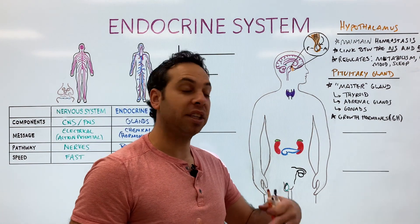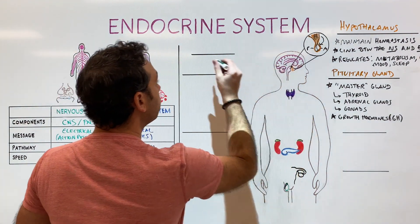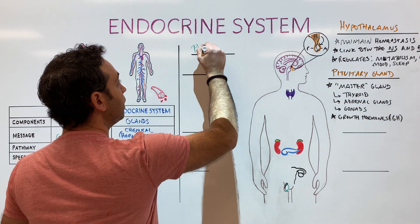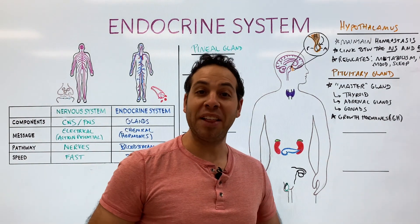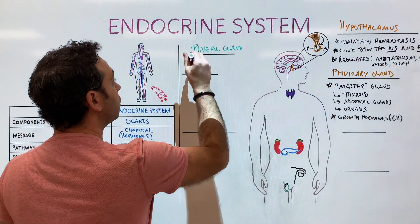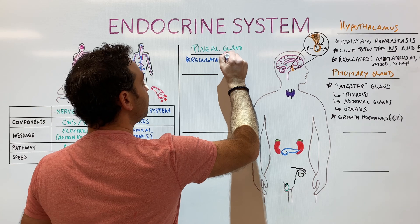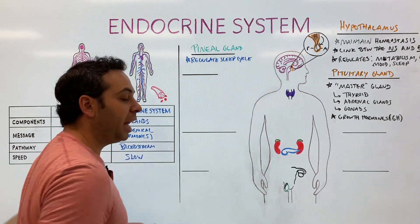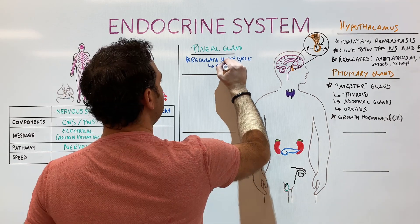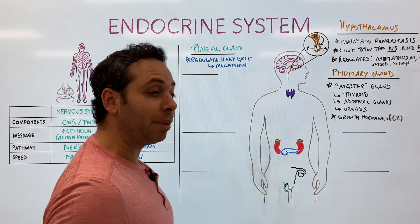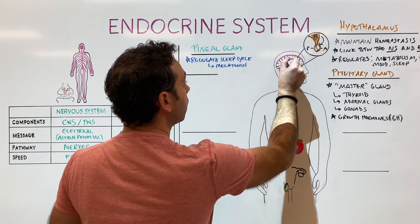The third gland in the brain is the pineal gland, named because it looks like a pinecone. It primarily deals with sleep — it helps regulate our sleep cycle by releasing a specific hormone that makes us sleepy. That hormone is melatonin. When we get up in the morning, our pineal gland suppresses melatonin to get us nice and awake.